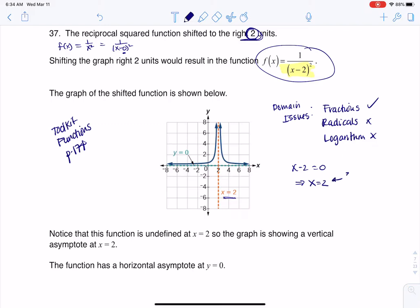And since x equaling 2 zeros out only the denominator, that is where our vertical asymptote lives. So that's why we've got a vertical asymptote at x equaling 2.